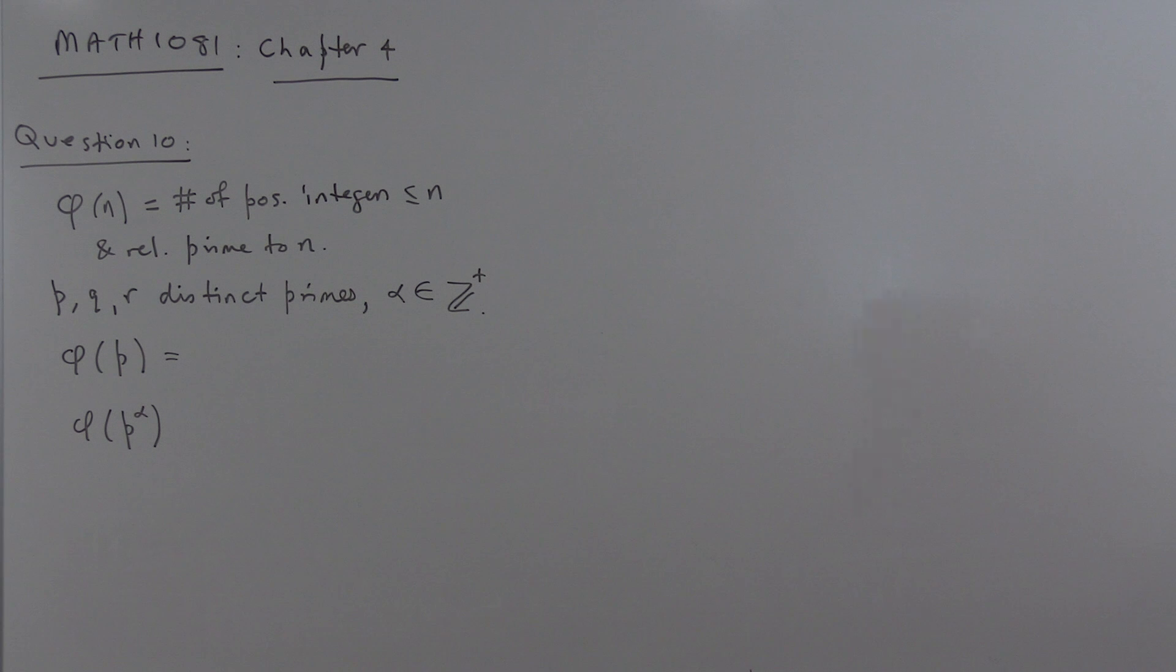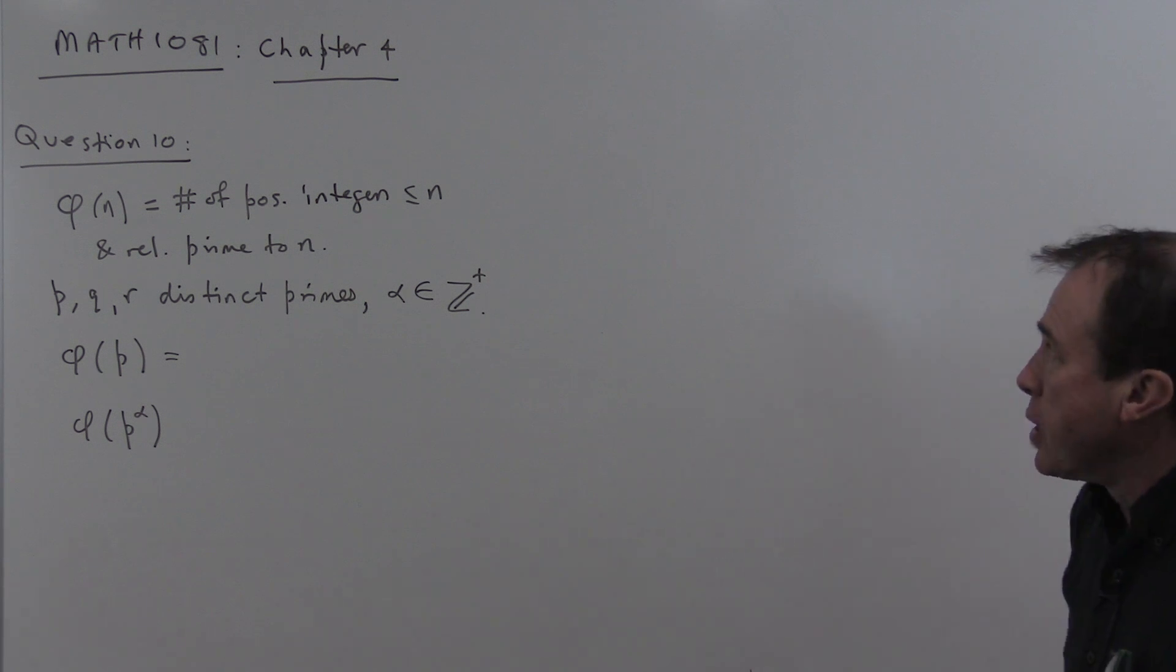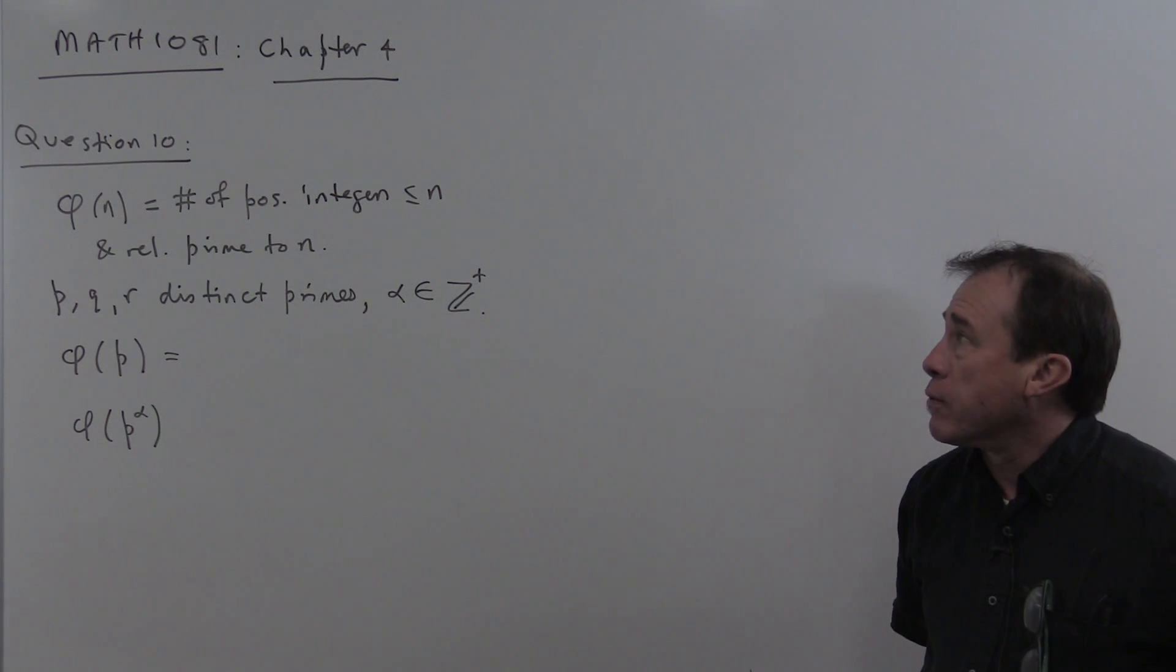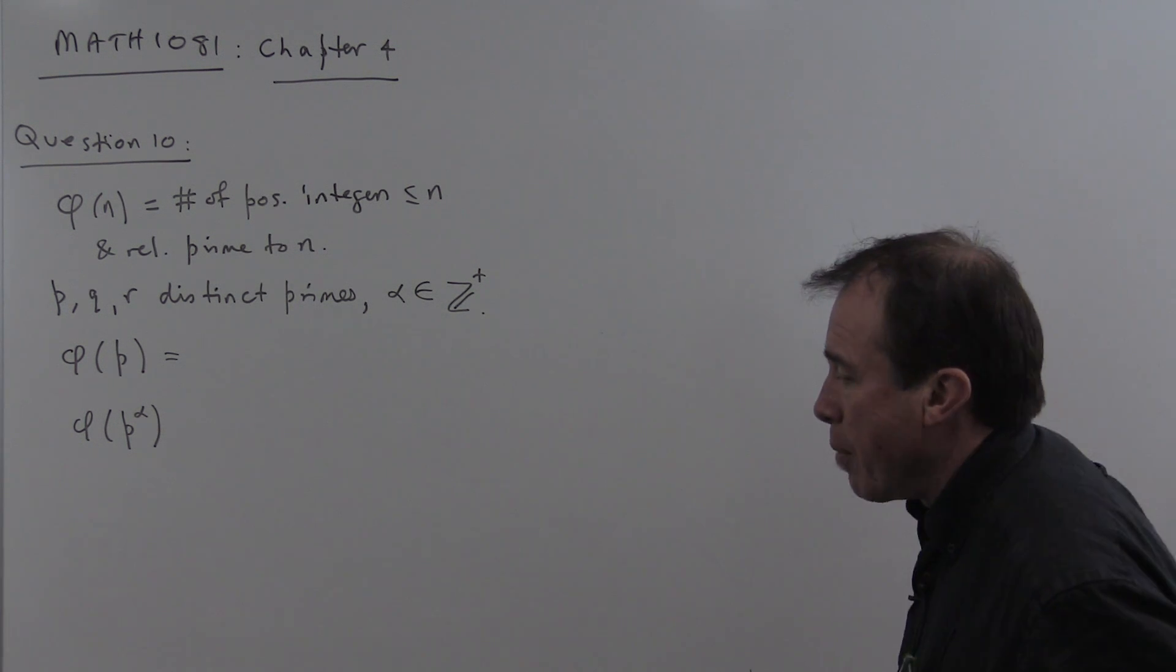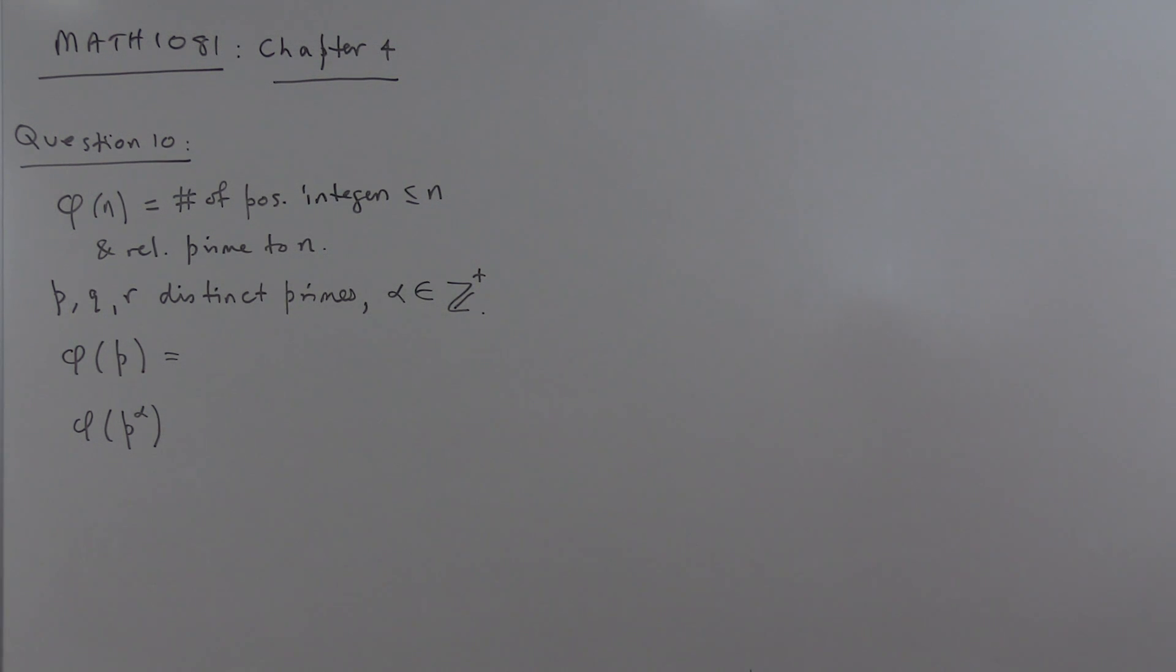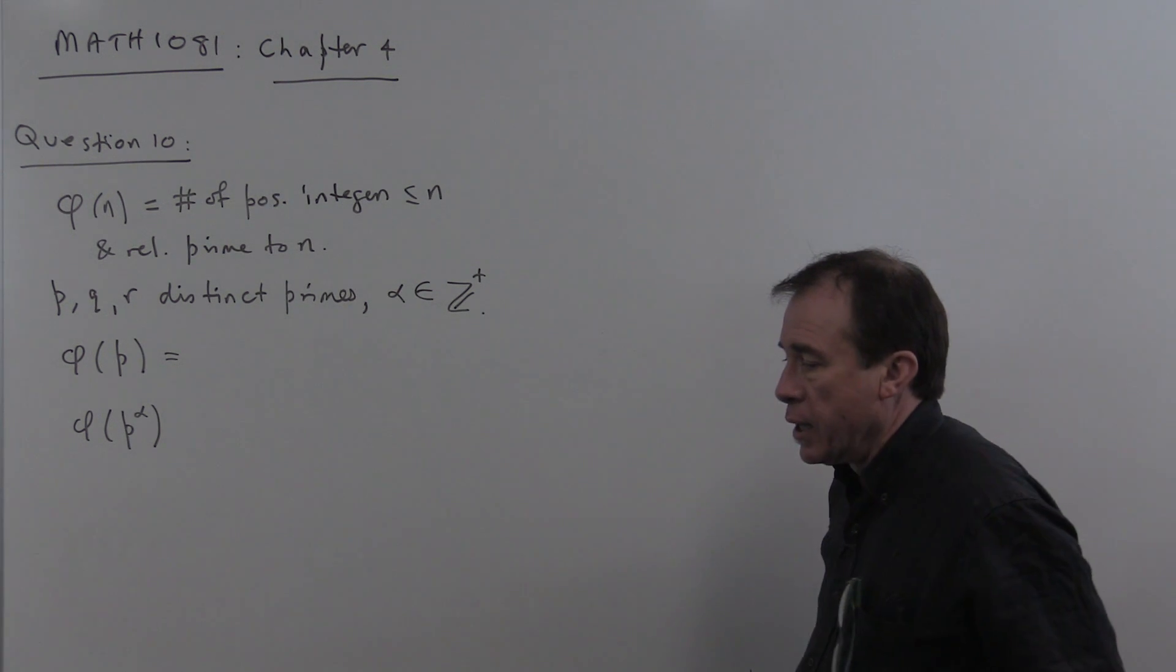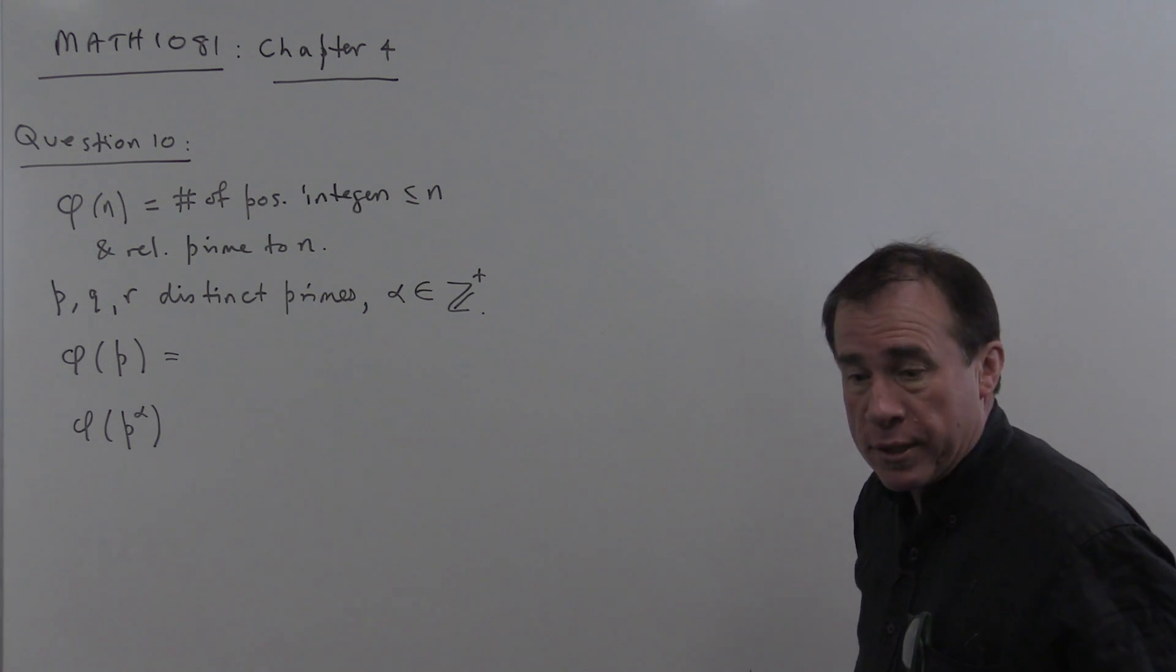Hello, this is Discrete Maths, Maths 108.1. In this section, we're going to look at a selection of questions out of Chapter 4 of this course. These are questions based around ideas connected with counting and combinatorial mathematics. I'm going to try and pick ones that probably your tutor won't cover in tutorials, including some slightly more difficult ones.